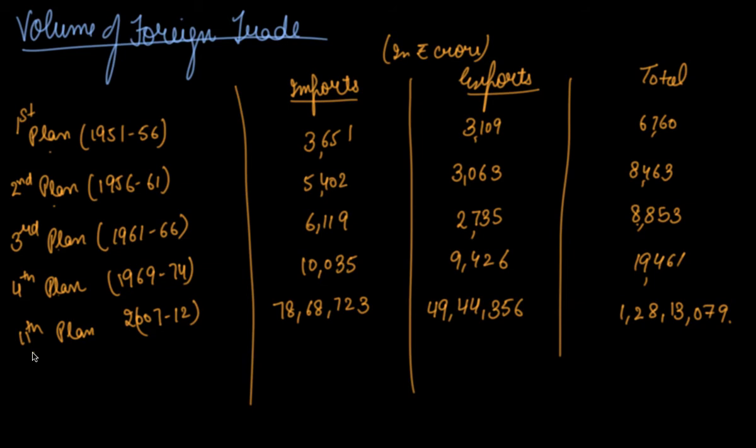So the ultimately effect on the volume of the foreign trade was, in 1951-1956 plan, it was 3,651 crore, whereas after the 11th year plan in 2007-2012, your imports are these much. Can you see the drastic change in the volume? So the volume has changed after the independence of the foreign trade by the continuous efforts of the government.